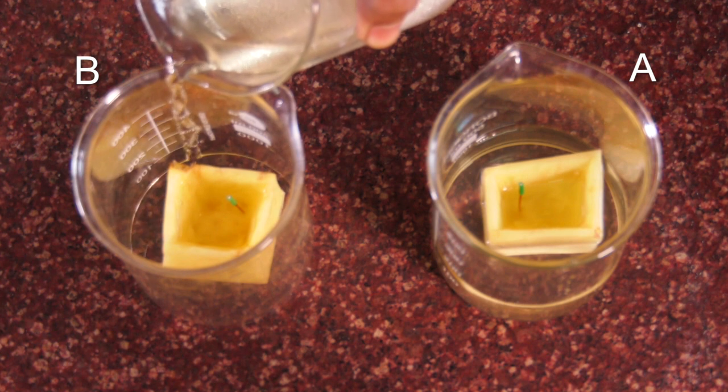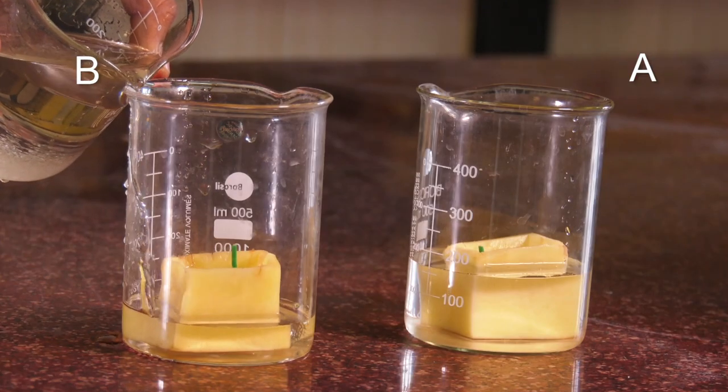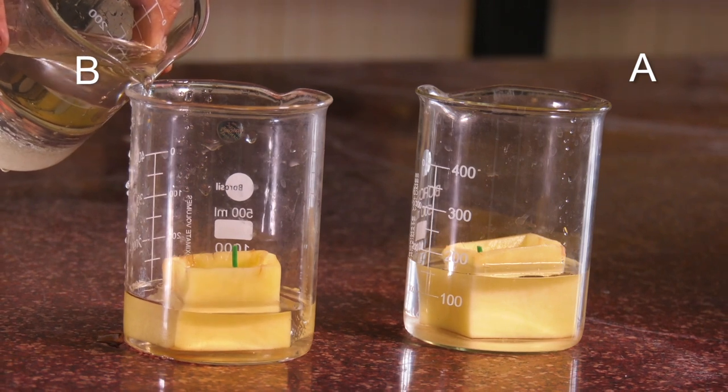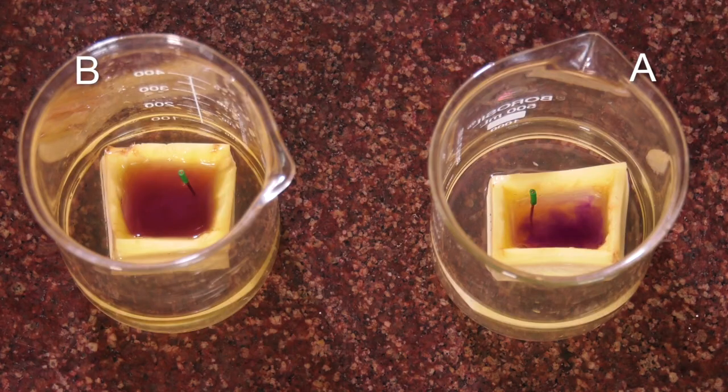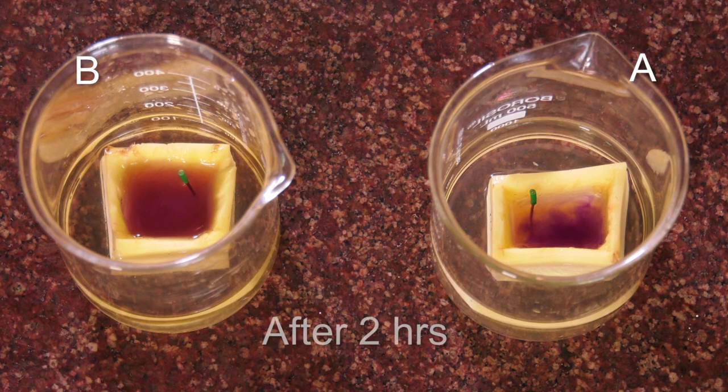Pour the sugar solution inside the beaker. Add drops of eosine in both to lend some colour. Now leave both the petri dishes undisturbed for at least 2 hours.